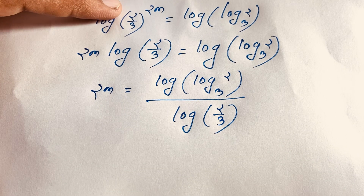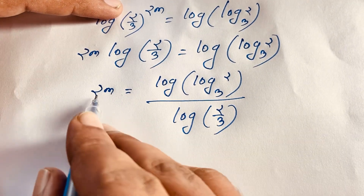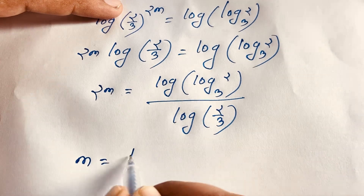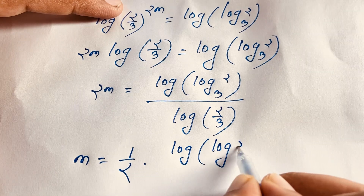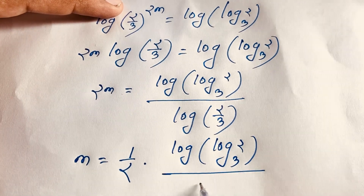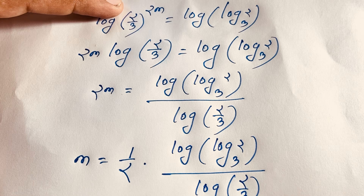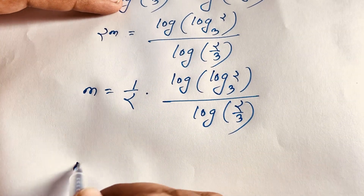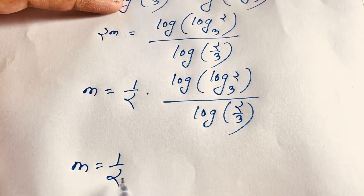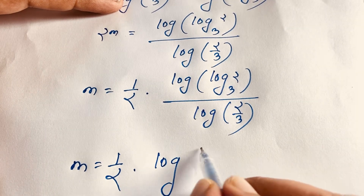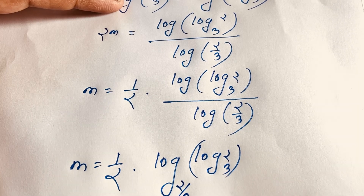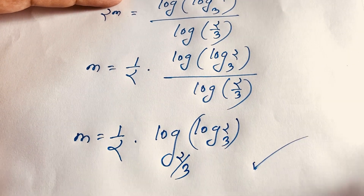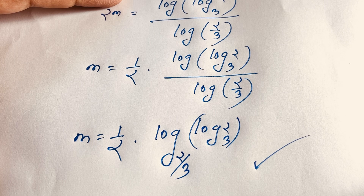Finally, dividing both sides by 2, we get m equals one half times log(log 2 base 3) divided by log(2/3). This can be written as m equals one half times log base (2/3) of (log 2 base 3). This is our final answer for this exponential equation. Thank you all — if you enjoyed this video, please subscribe to my channel. Goodbye, take care.